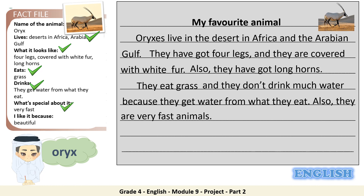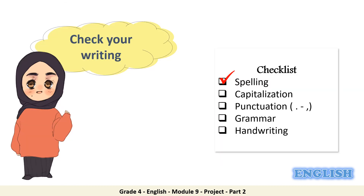Now it's time for Ahmed to end his writing with the final information from the fact file. In the third paragraph he writes: I like oryxes because they are beautiful animals. Make sure when you want to check your writing, you refer to the following checklist: check your spelling, capitalization, punctuation, grammar, and make sure you write in nice handwriting.